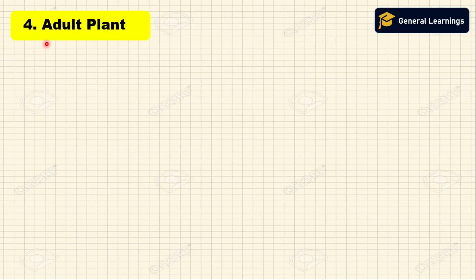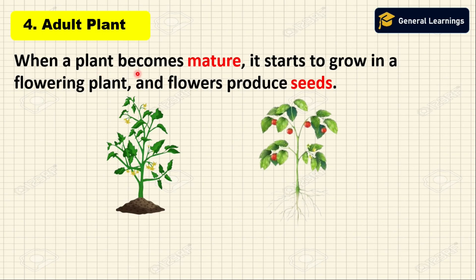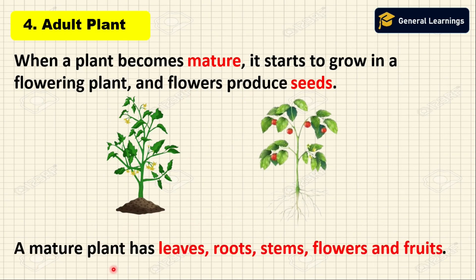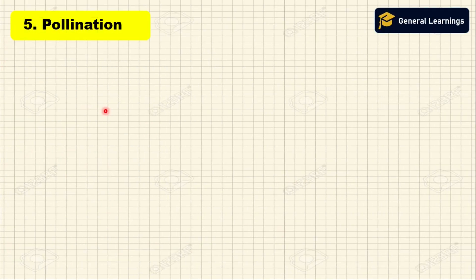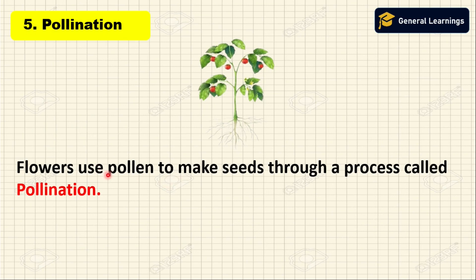The next stage is adult plant. When a plant becomes mature, it starts to grow into a flowering plant. Flowers produce seeds. The mature plant has leaves, roots, a stem, flowers, and fruits.